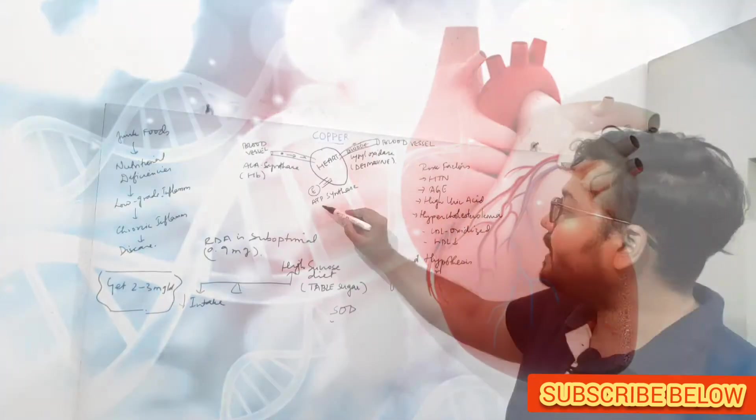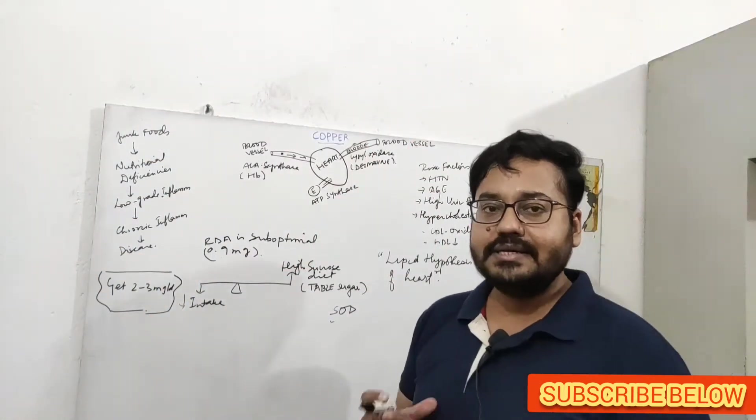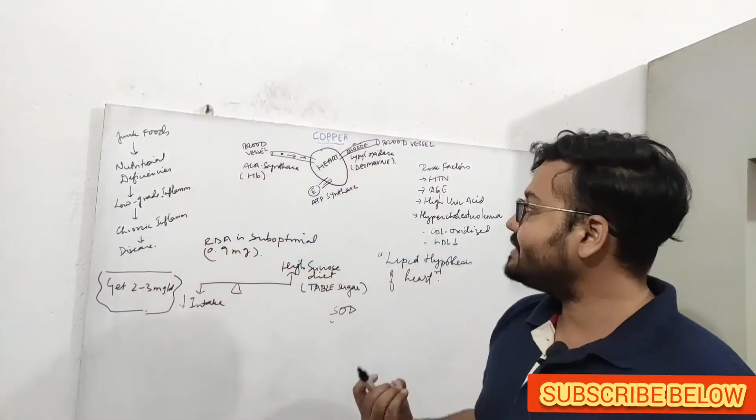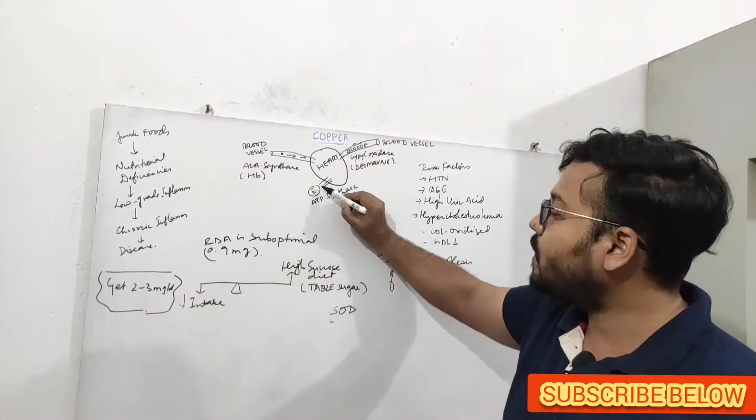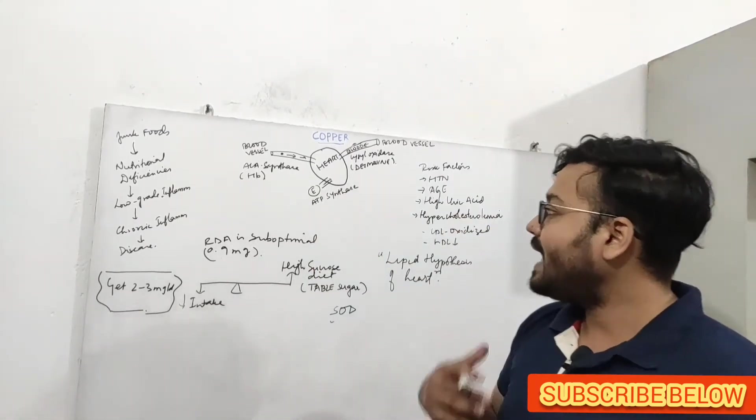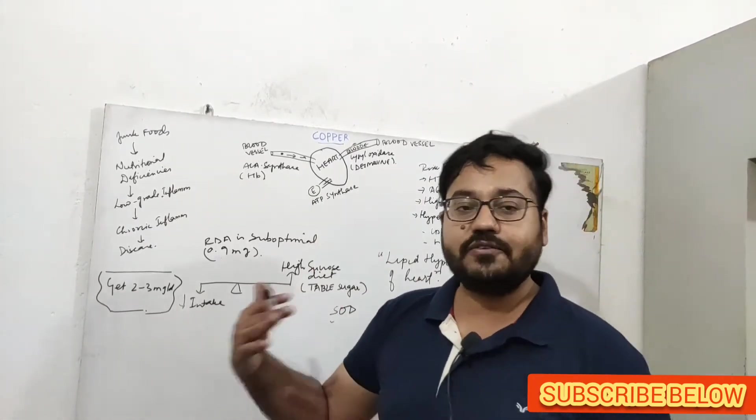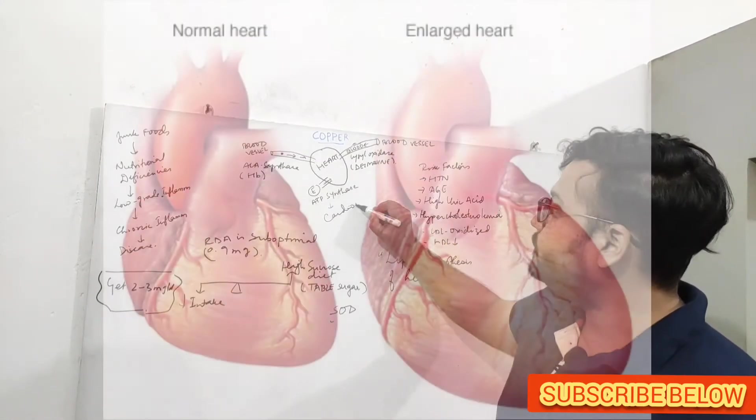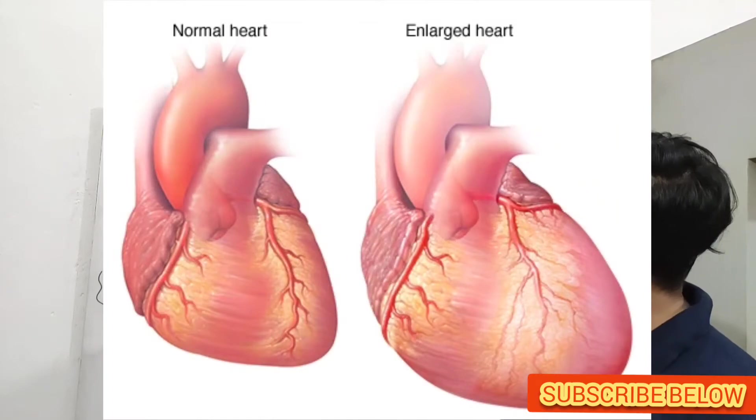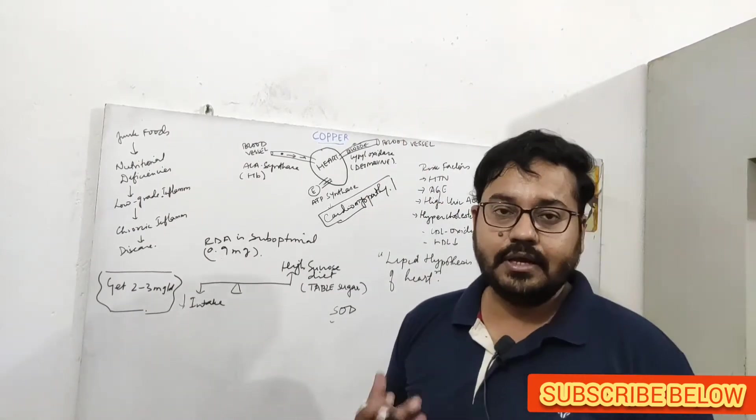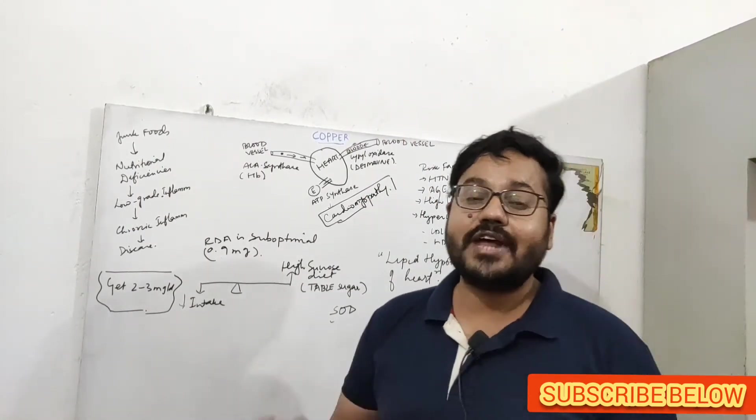Copper is also very important for ATP Synthase. This enzyme is necessary for ATP production, energy production. In a copper deficient state, your heart muscle cannot uptake energy. That can greatly affect the contractility of your heart muscle. If this goes for a long period of time, it can lead to cardiomyopathy. Your heart muscle can become enlarged and the function of your heart muscle can decline and it can also affect the ejection fraction.